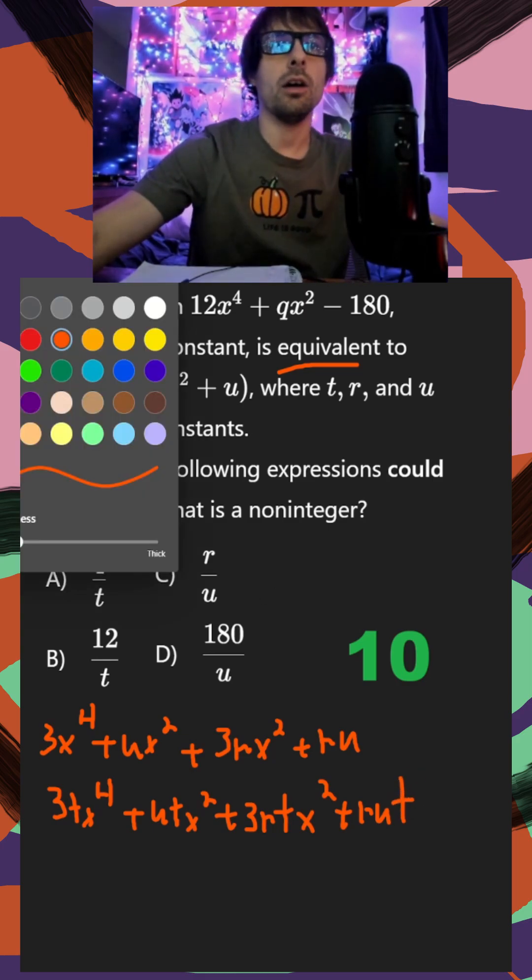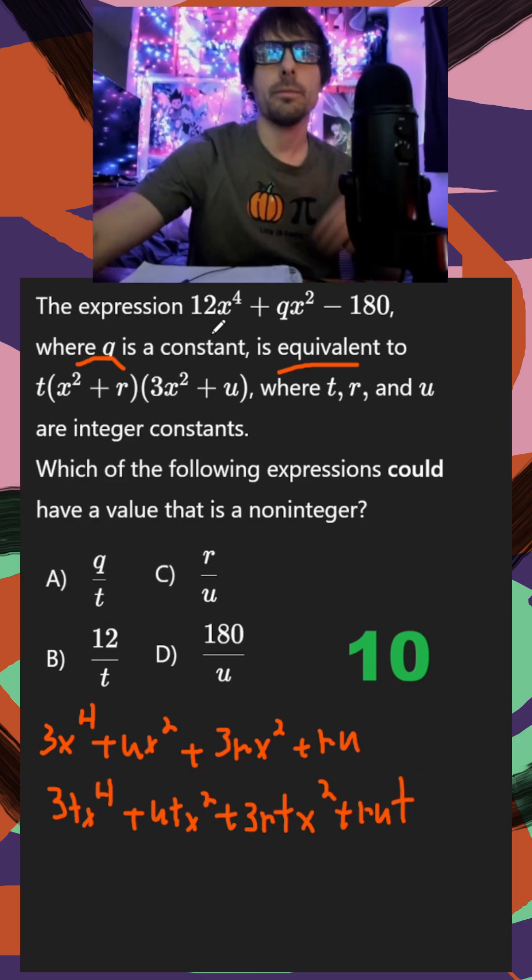And then we try to categorize them based on their x power. So I would say my x to the fourth term is equal to my x to the fourth term, specifically my coefficient. So I know 12 is equal to 3t. Therefore, my t is going to be equal to 4.